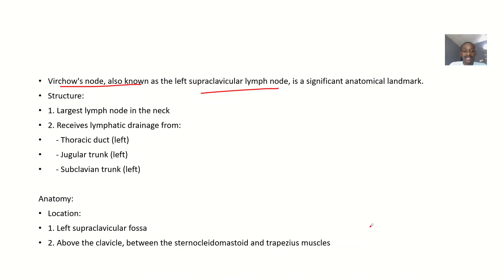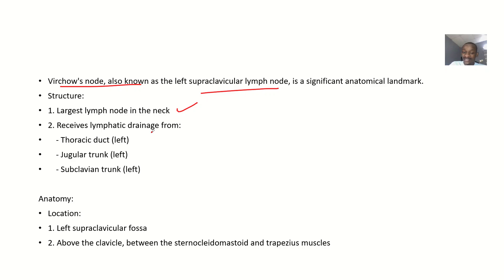Let's talk about its anatomy. Basically, it is the largest node in the neck — that's why it is unique and why we study it. It receives lymphatic drainage from the thoracic duct, jugular trunk, and subclavian trunk. So it's the largest in the neck and receives from three different ducts.